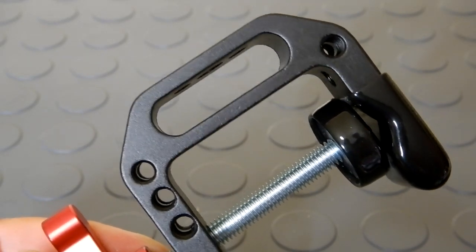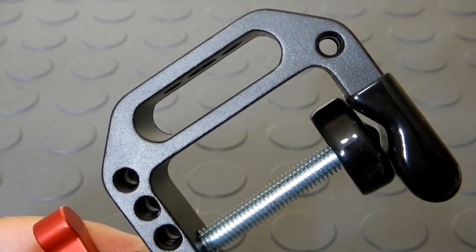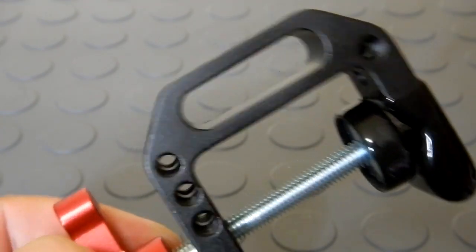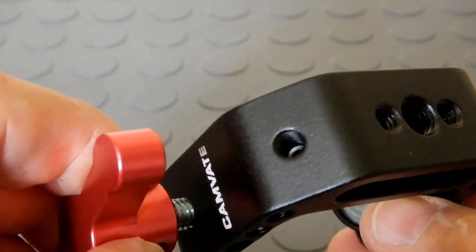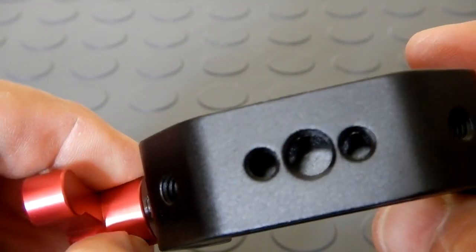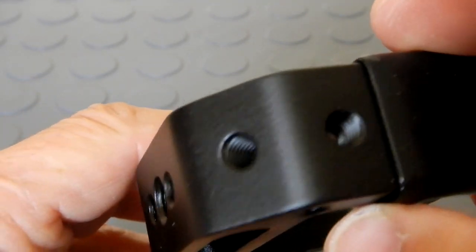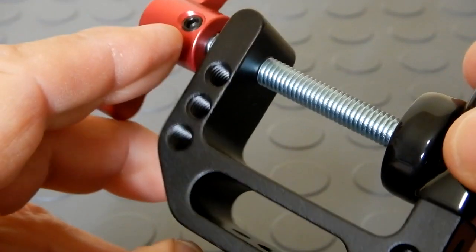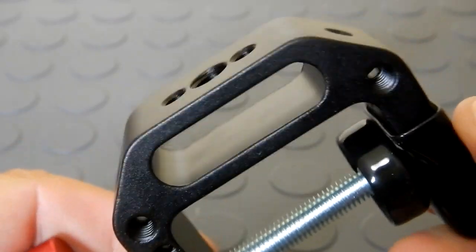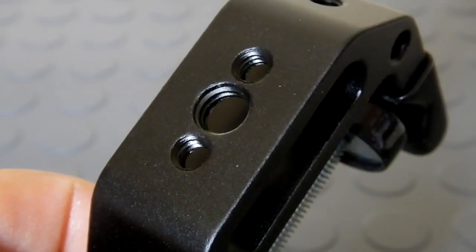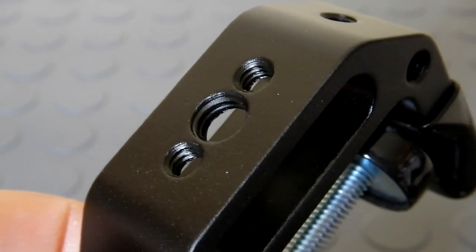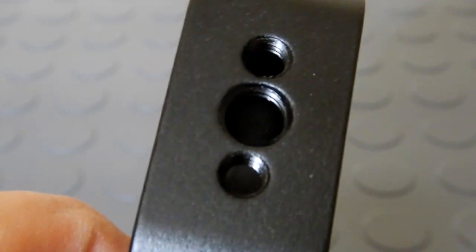It has numerous 1/4-20 threaded holes. As you can see these are through, then on top we have there, two there, some more there. So plenty to do any fixturing that you may want. It has one single 3/8-16 threaded hole, as you see there in the center.